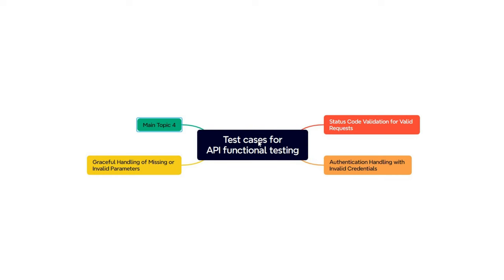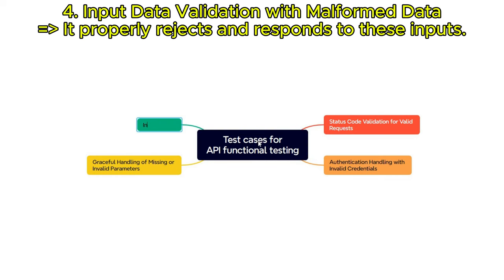Next, we need to test input data validation with malformed data. Test the API's input validation by submitting various forms of malformed data, such as invalid email formats, and confirm that it properly rejects and responds to these inputs.